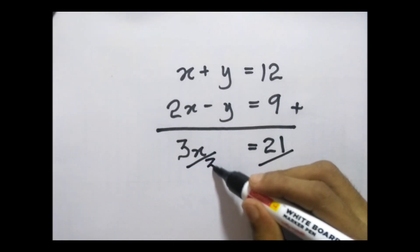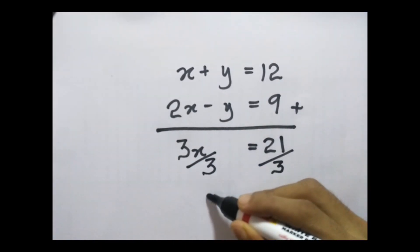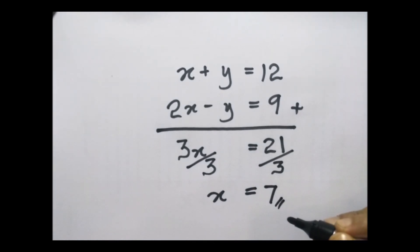Now we got the value of x: x = 21 divided by 3, which is 7. They're only asking to find the value of x.